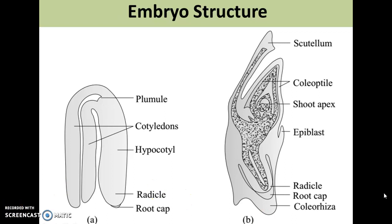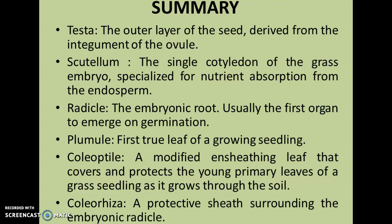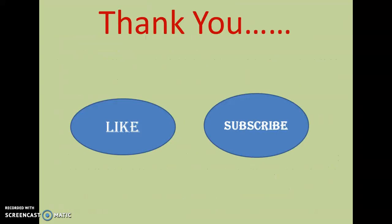In summary: the testa or seed coat is the outer layer of the seed derived from the integument of the ovule. The scutellum is the single cotyledon of the grass embryo, specialized for nutrient absorption from the endosperm. The radicle is the embryonic root, usually the first organ to emerge on germination. The plumule is the first true leaf of a growing seedling. The coleoptile is a modified sheathing leaf that covers and protects the young primary leaves of a grass seedling as it grows through the soil. The coleorhiza is a protective sheet surrounding the embryonic radicle.